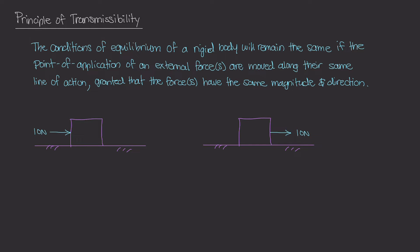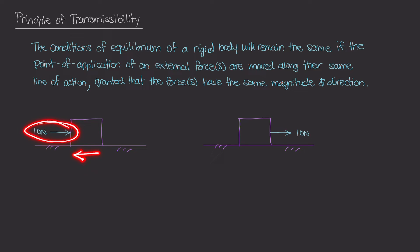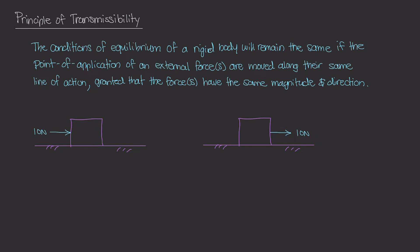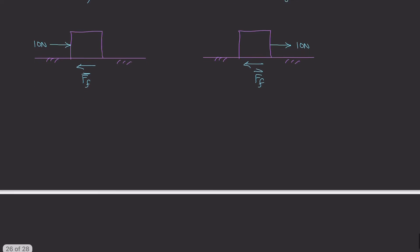Taking this further, let's say the surface between the ground and the box has some friction force. In the first scenario there's a friction force applied to the left, counteracting the 10 newton force. Whether we apply the 10 newtons on the left or the right side of the box, this friction force — F of F — is going to be exactly the same in both scenarios.